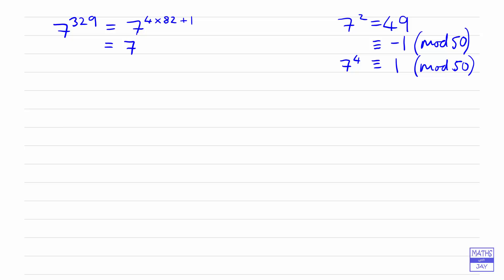So we can write this as 7, that's the 7 to the power of 1, multiplied by 7 to the power of 4 to the power of 82. So there I've just rewritten 7 to the power of 329 in terms of 7 to the power of 4.